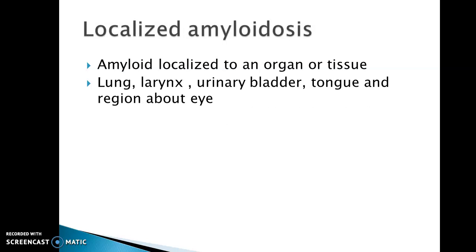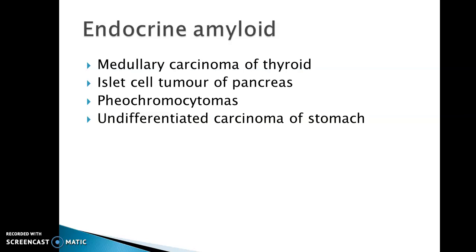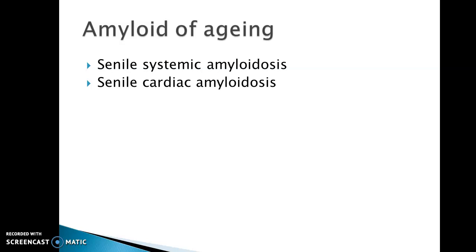Localized amyloidosis refers to amyloid localized to an organ or tissue such as lungs, larynx, urinary bladder, tongue, and region about the eye. Endocrine amyloid is seen in medullary carcinoma of thyroid, islet cell tumors of pancreas, pheochromocytomas, and undifferentiated carcinoma of stomach. Amyloid of aging is associated with senile systemic amyloidosis and senile cardiac amyloidosis.